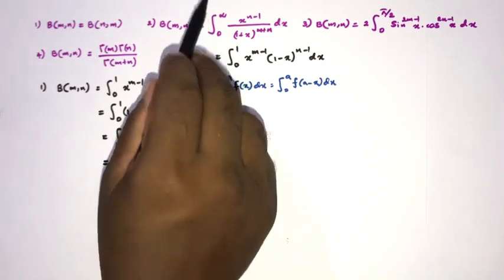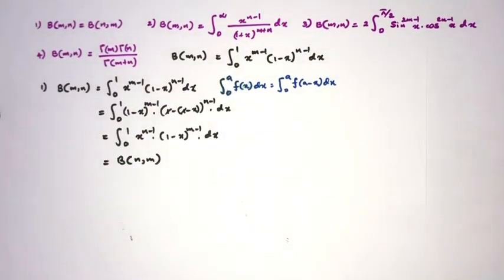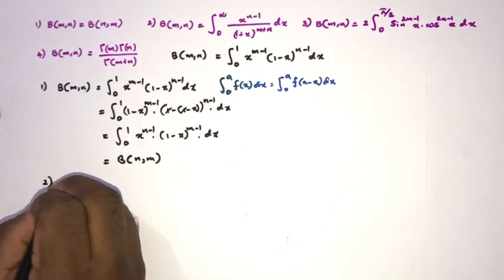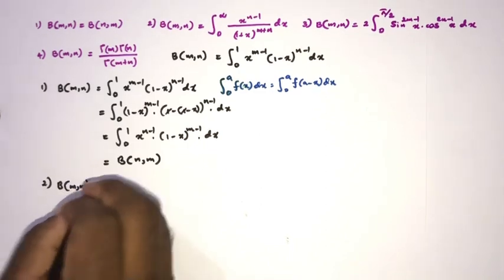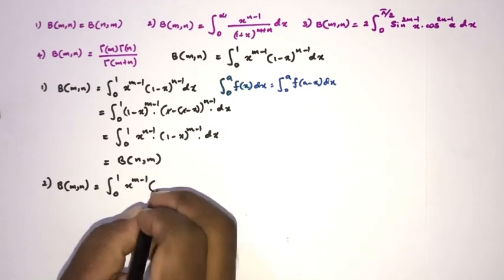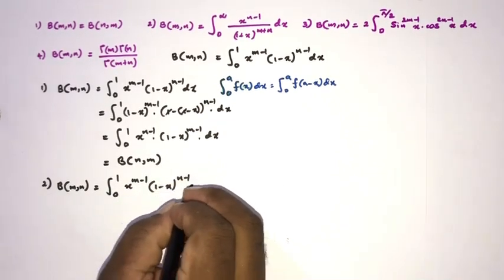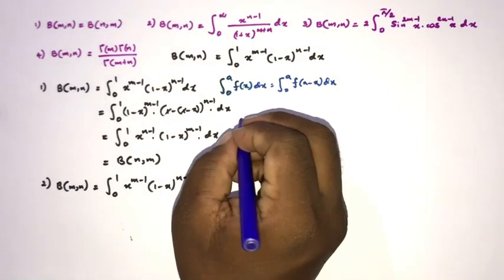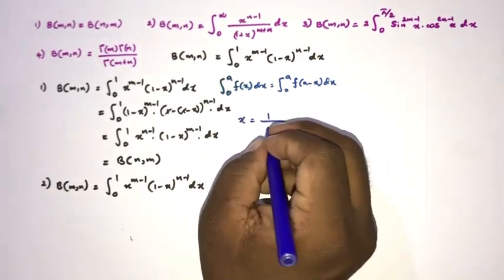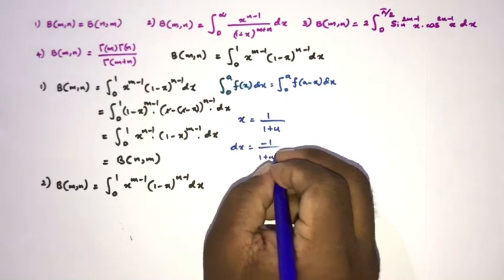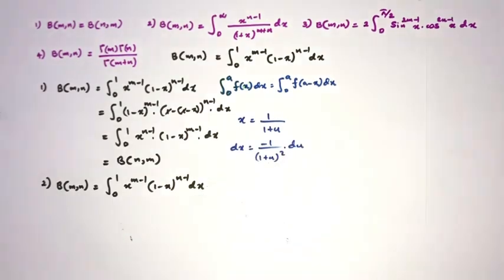Next we prove: B(m,n) = integral from 0 to infinity of x^(n-1) over (1+x)^(m+n) dx. We begin with the definition B(m,n) = integral from 0 to 1 of x^(m-1)(1-x)^(n-1) dx, and take the substitution x = 1/(1+u). Differentiating gives dx = -1/(1+u)² du.